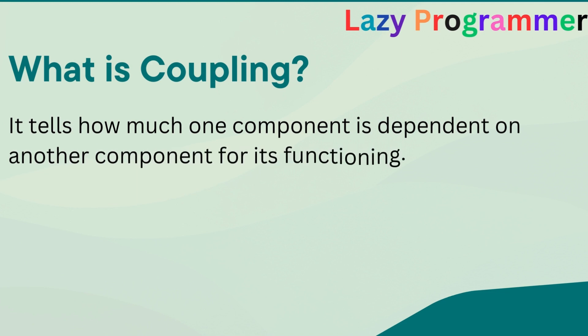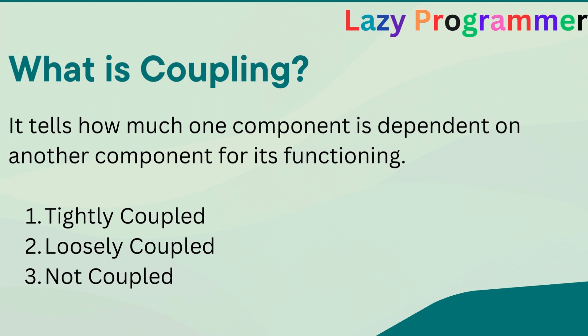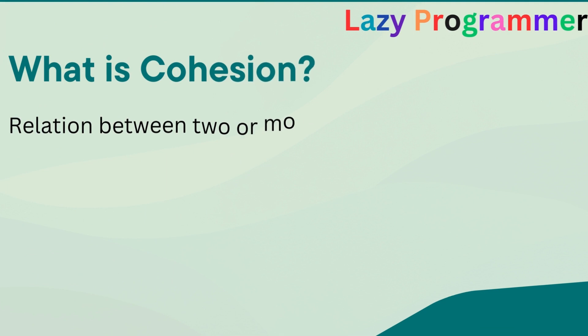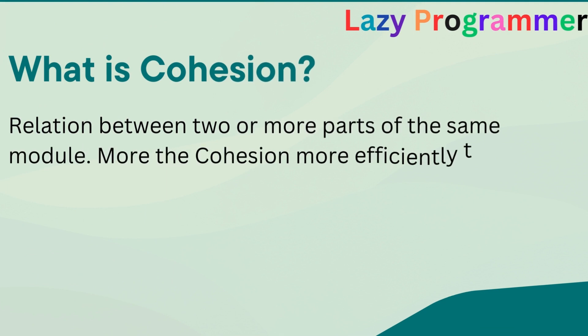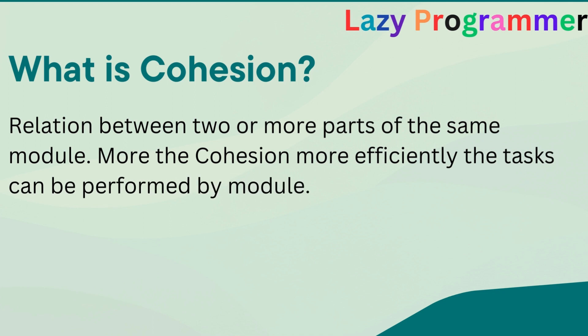The next question is: what is coupling? It is defined as the relationship between software modules and how much one module depends on or interacts with another. Coupling has three major categories: highly coupled, loosely coupled, and uncoupled. The best kind is loose coupling, achievable through interfaces. Related to this is cohesion — the relationship between parts of the same module that serve the same purpose. A module with high cohesion performs a specific function efficiently. A better-performing and scalable application should have less coupling and more cohesion.